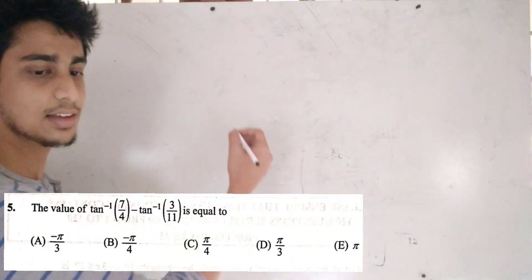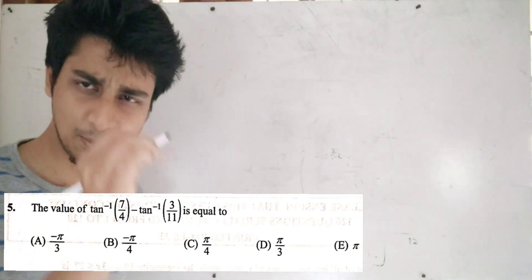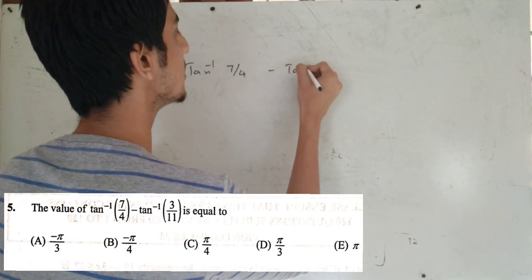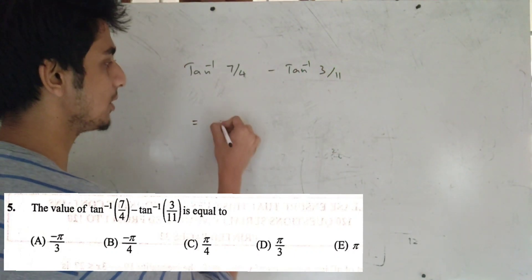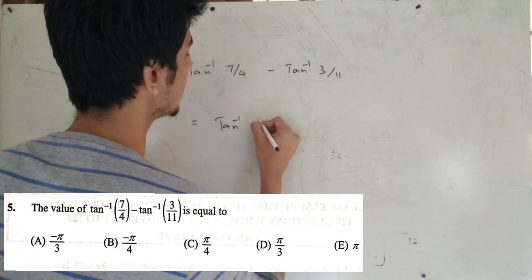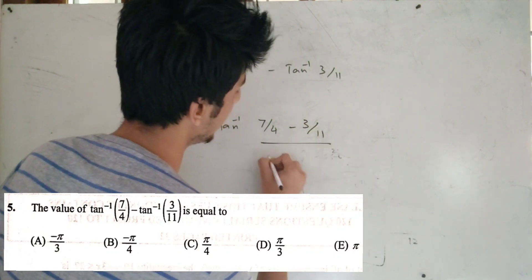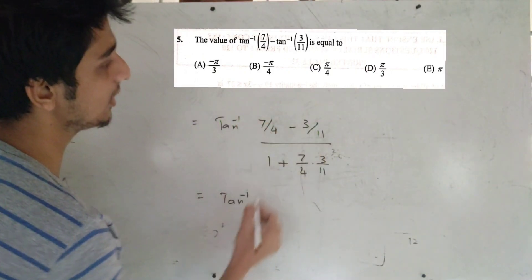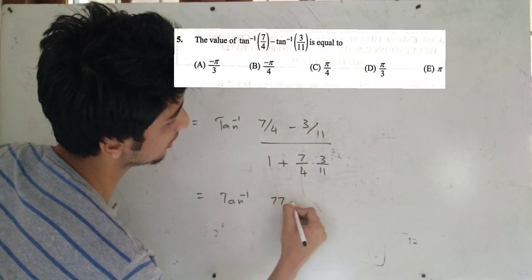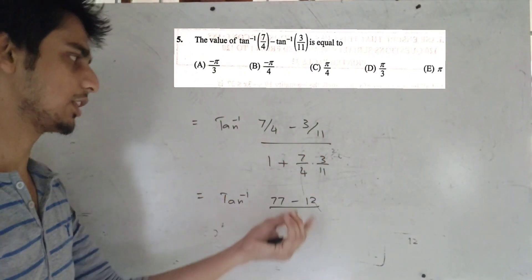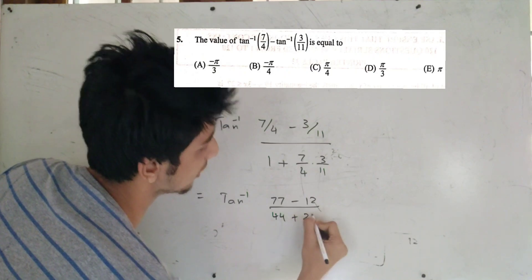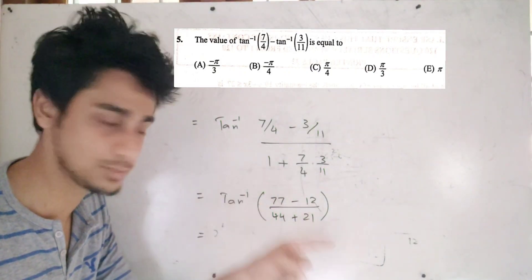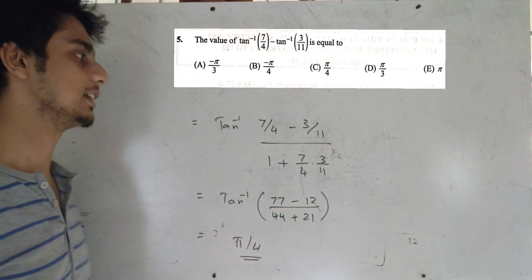The value of tan⁻¹(7/4) − tan⁻¹(3/11): using the formula tan⁻¹(a) − tan⁻¹(b) = tan⁻¹((a − b)/(1 + ab)), we get tan⁻¹((7/4 − 3/11)/(1 + (7/4)(3/11))) = tan⁻¹((77 − 12)/44 + 21/44) = tan⁻¹(1) = π/4 (45 degrees). A simple formula-based question.